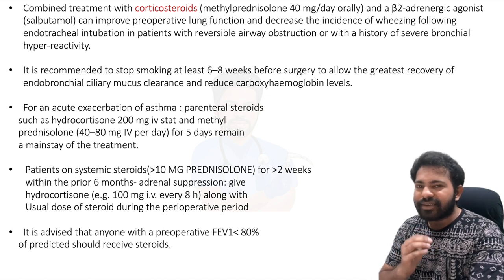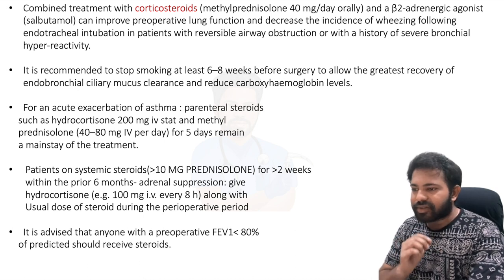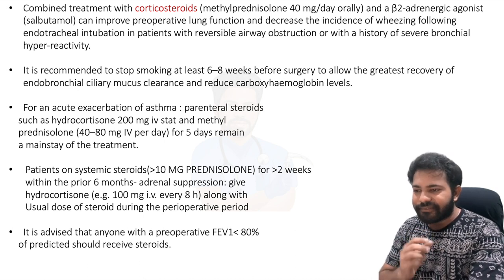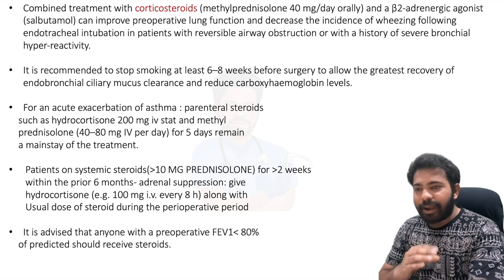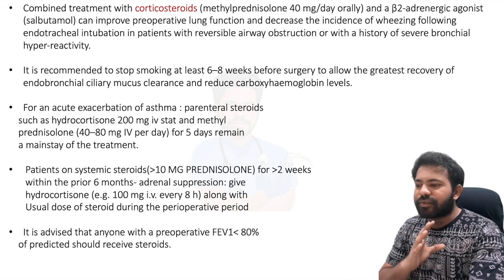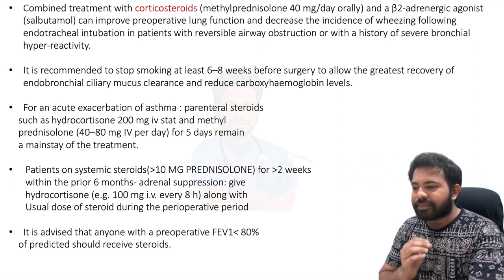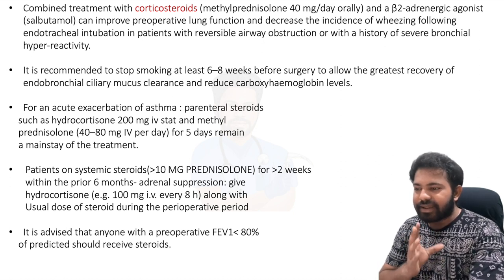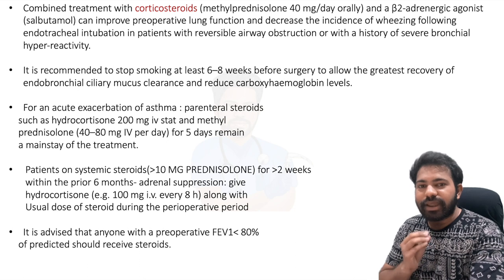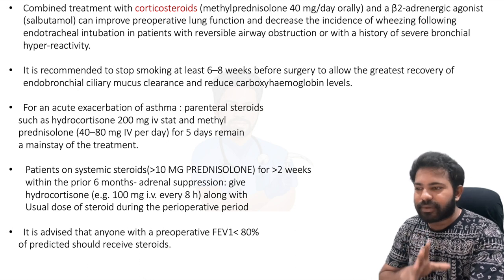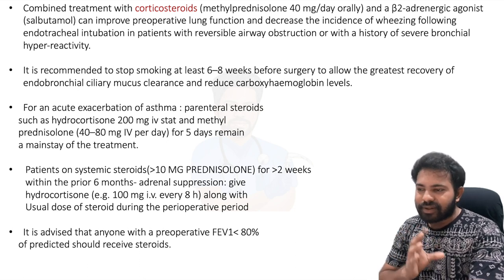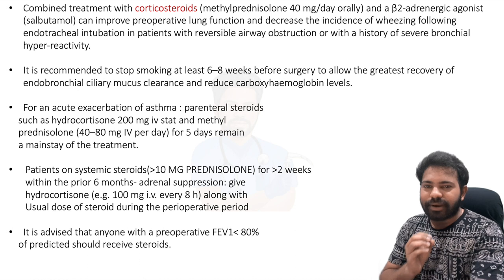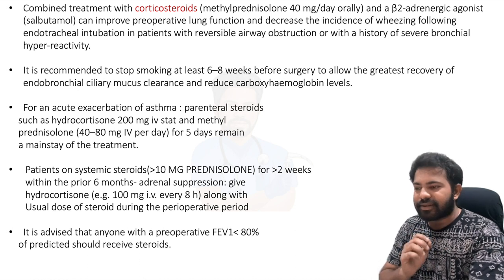For an acute exacerbation of asthma, parenteral steroids such as hydrocortisone 200 mg IV stat and methylprednisolone 40 to 80 mg IV per day for five days remain the mainstay of treatment.